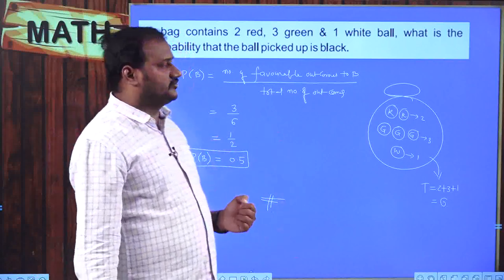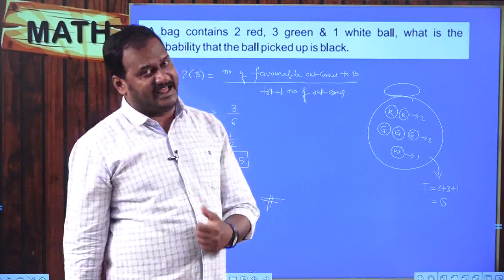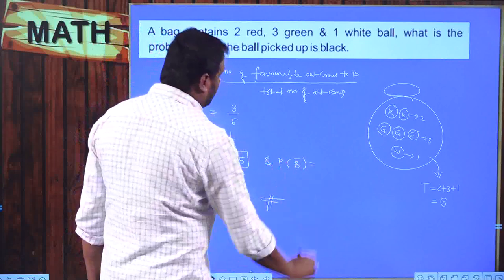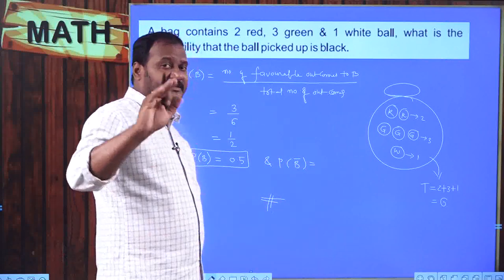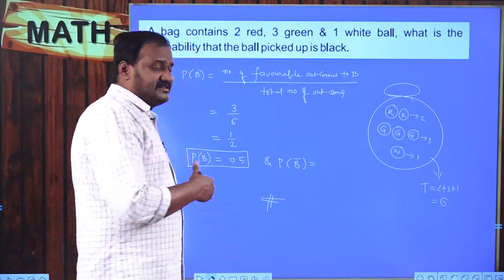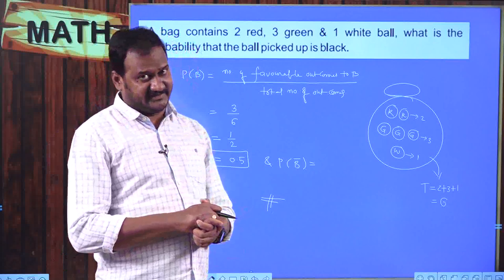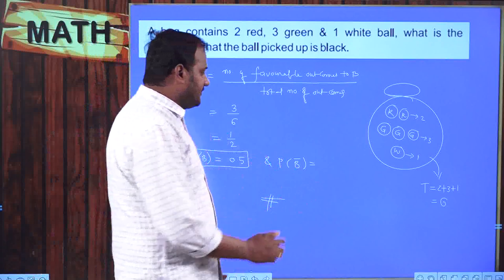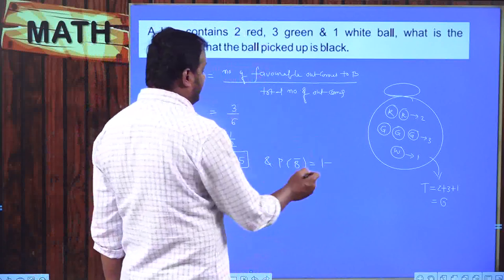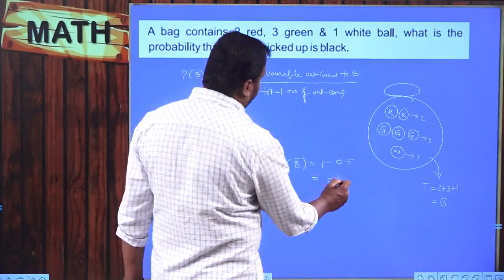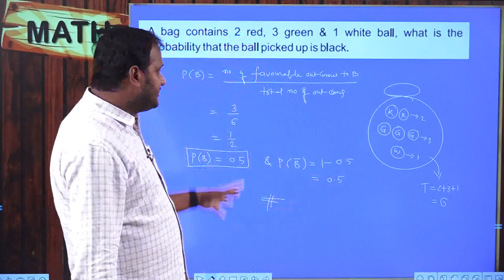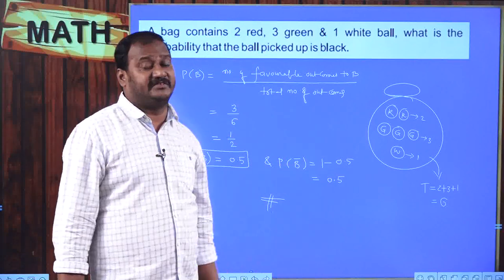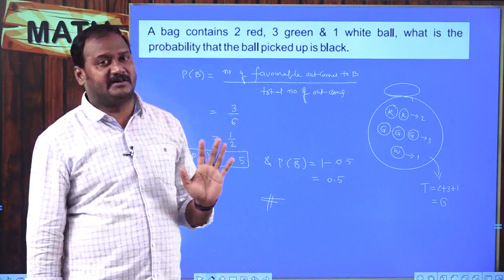At the same time, what is the probability of not getting a black ball? That is 1 minus probability of getting a black ball. P(B) + P(B complement) = 1, so P(B complement) = 1 − 0.5 = 0.5. In this particular case, probability of occurrence and probability of non-occurrence are both equal to 0.5.